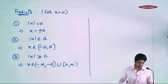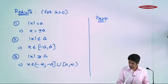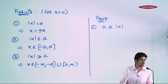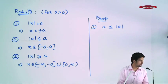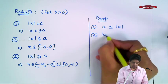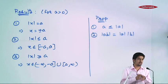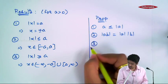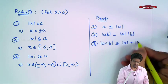Phir aapne iski properties padhi thodi bahut. Number 1: every element is less than equal to its mod. Agar a positive hai, tu apne mod ke barabar aa jayega. Agar a negative hai, say minus 5, tu apne mod se chota aayega — because a negative hoga, mod a positive. Second: mod of a·b is equal to mod a · mod b. Multiply karke magnitude le lijiye ya magnitude leke multiply kar dijiye, ek hi baat hai.